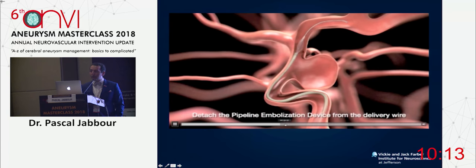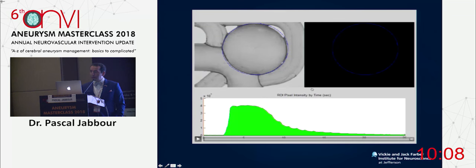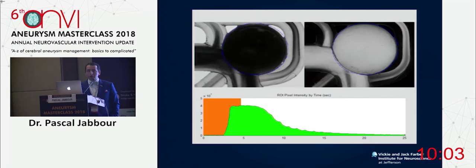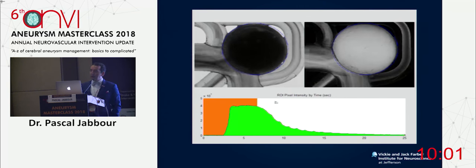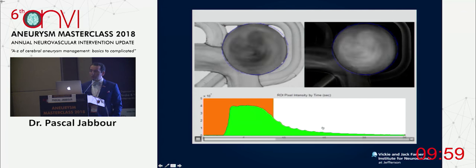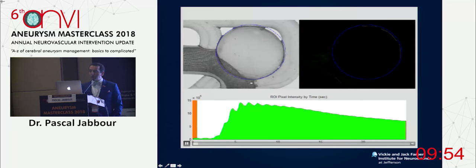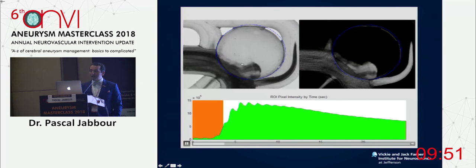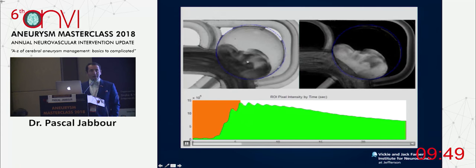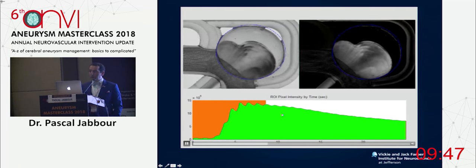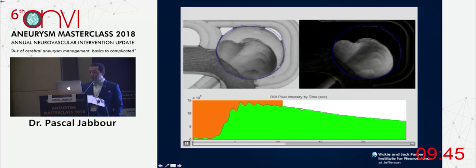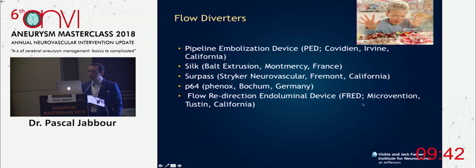Here we're talking about something else — we're talking about flow diversion. It's a different concept. This is in vitro: here is an aneurysm without flow diversion. We're injecting and this is the coefficient of washout of the contrast from the aneurysm — as you see, it's steep. And this is after we put a flow diverter — you can see the waving of the contrast, and the coefficient of washout becomes really less steep.